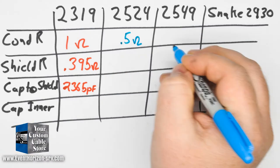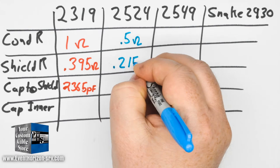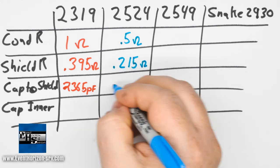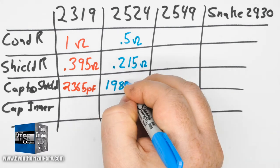Mogami 2524: the center conductor is 0.5 ohm, the shield resistance is 0.215 ohm, the capacitance to shield is 1985 picofarads.